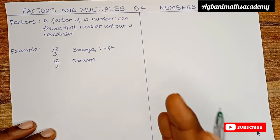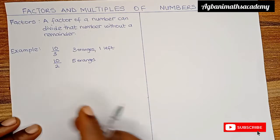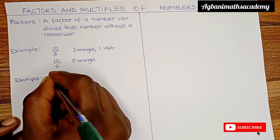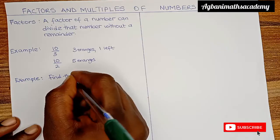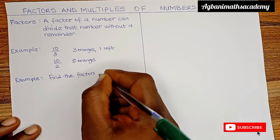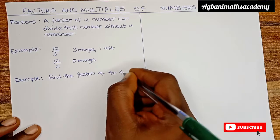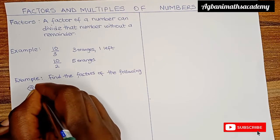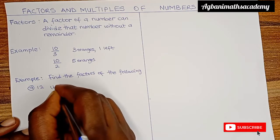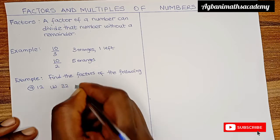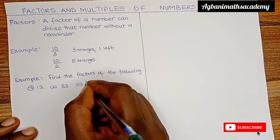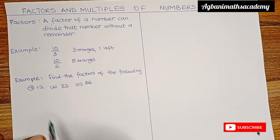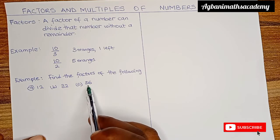We are going to see how to find the factors of a given number. Find the factors of the following: A — factors of 12, B — factors of 32, and C — factors of 56. So we have 3 numbers that we are going to find the factors of. The first is 12, the second is 32, and the third is 56.